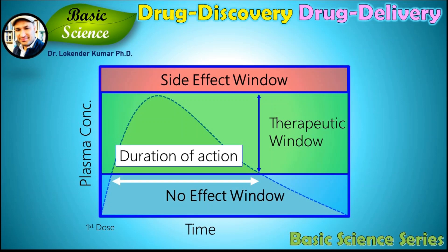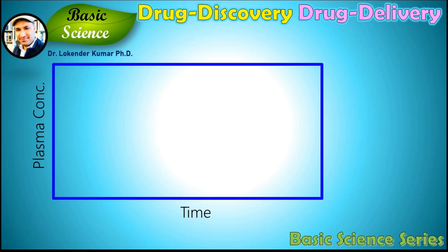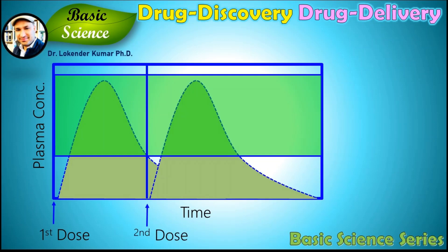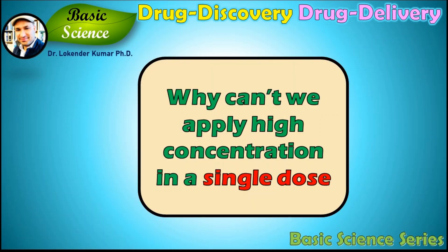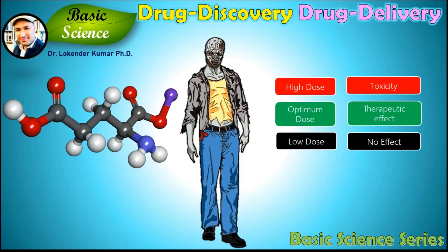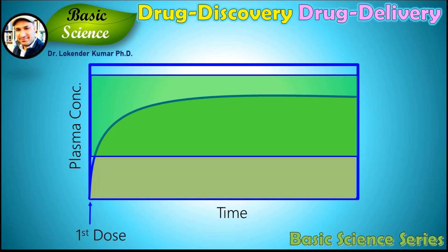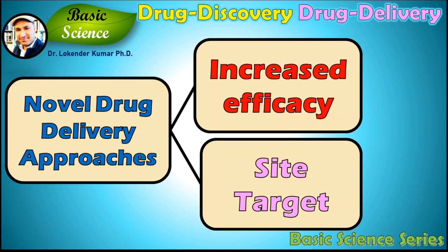To maintain a particular concentration of drug in plasma, we need to apply different doses. After the first dose, you need to apply a second dose when there is a decline below the therapeutic window, and then a third dose to maintain the therapeutic concentration to treat the disease. An important question is: why can't we apply a high concentration of drug so the plasma level remains higher? The answer is that all drug molecules are really toxic to human body organs. So you need a concentration below the side effect level but above the no effect window. Therefore, novel drug delivery approaches are invented, which not only help increase drug efficacy but also enable site-directed delivery of the drug molecule.